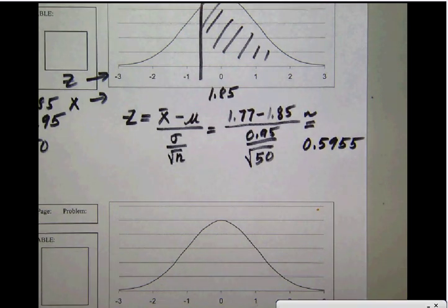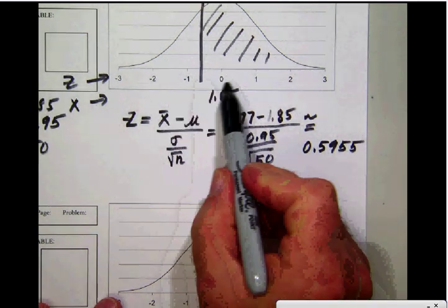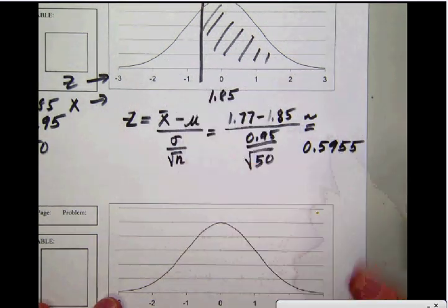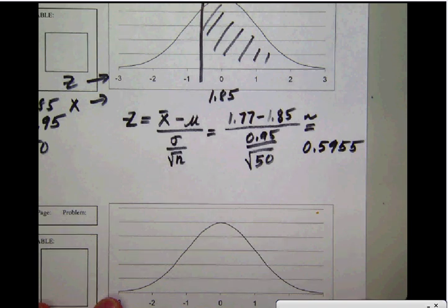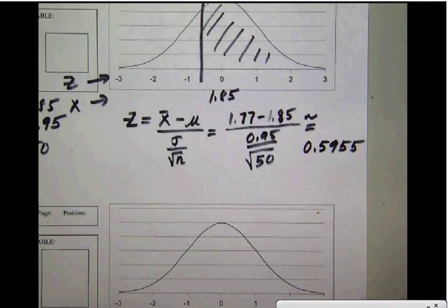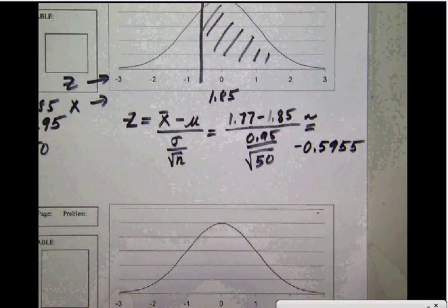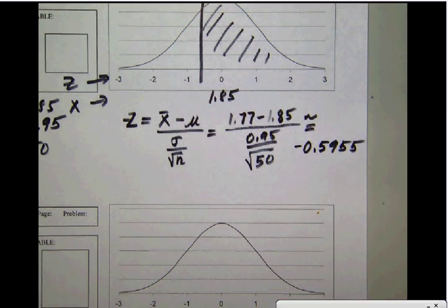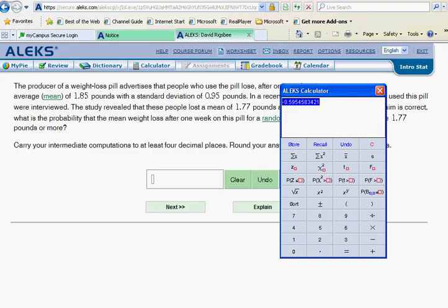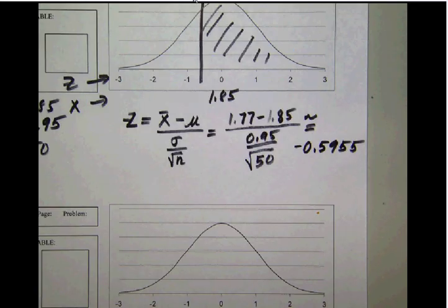Notice once again that is a z-score—a value down here on the z-axis between 0 and negative 1. We can see that z value needs to be negative.